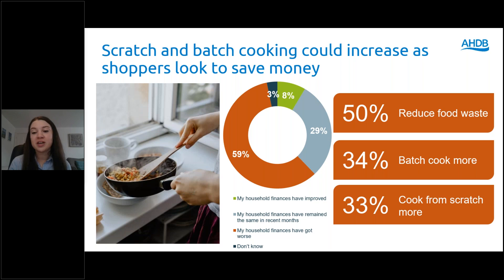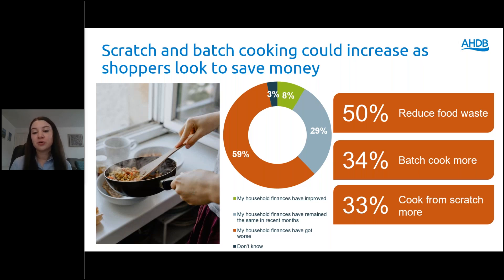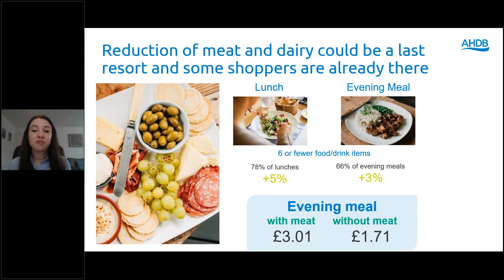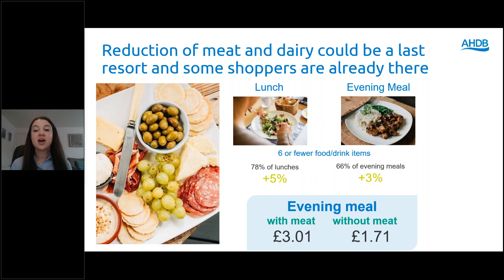Reducing food waste is the most popular way that shoppers are looking to save money in home, with half of struggling households considering this as a way to save money in the future. Batch cooking is also an option for consumers, especially those who are worried about appliance use — cooking large meals in the oven several at once could be an option for those looking to be more efficient with their cost of energy. Those that are reducing their meat consumption cite cost as now the biggest reason, up 33 percentage points. In general, we have seen consumers scaling back on the number of ingredients they're using in meals, with two thirds of evening meals containing six or fewer items.